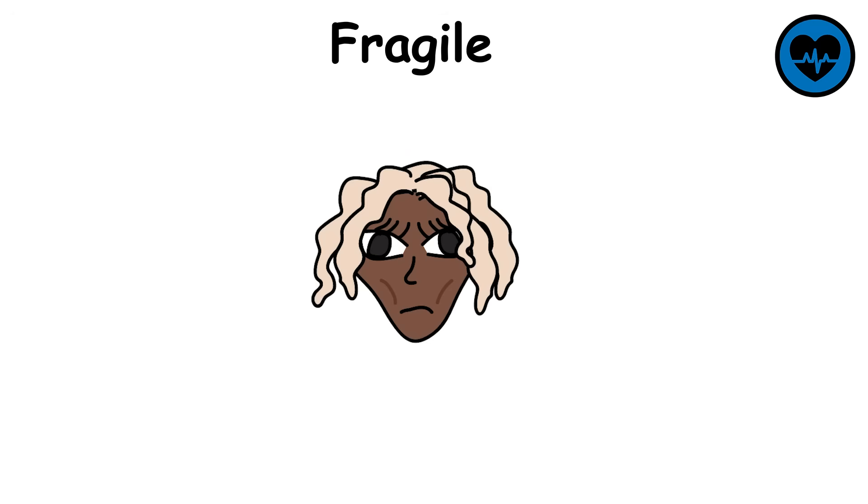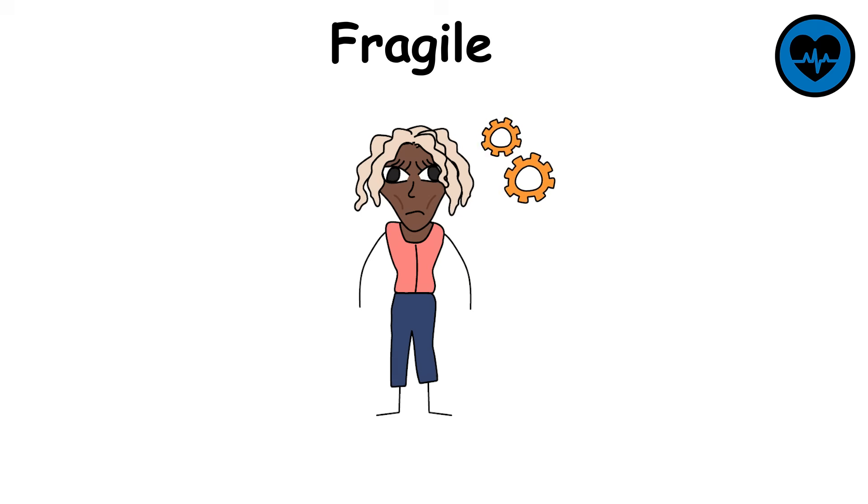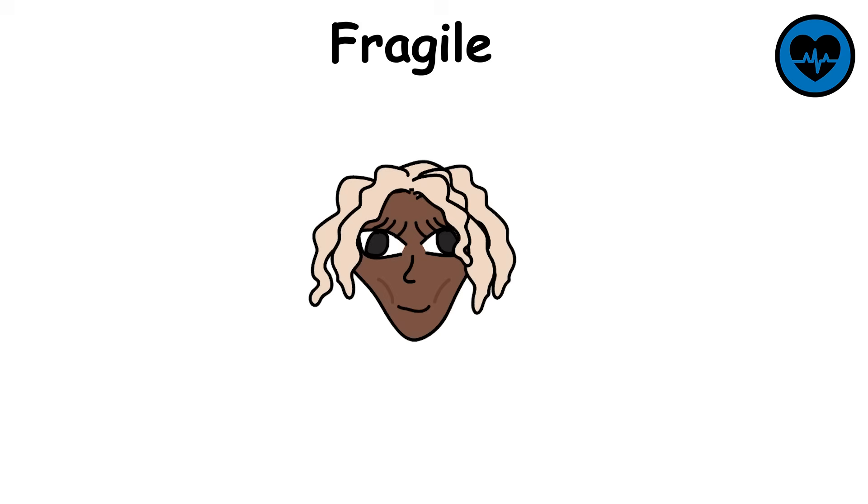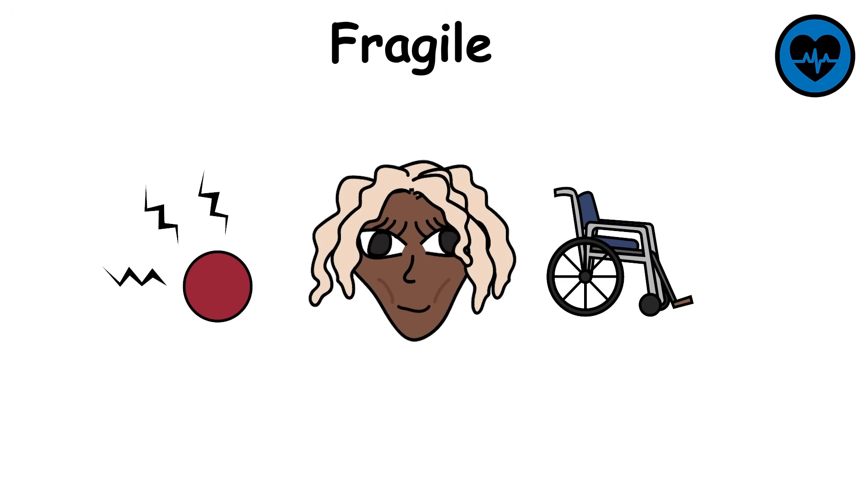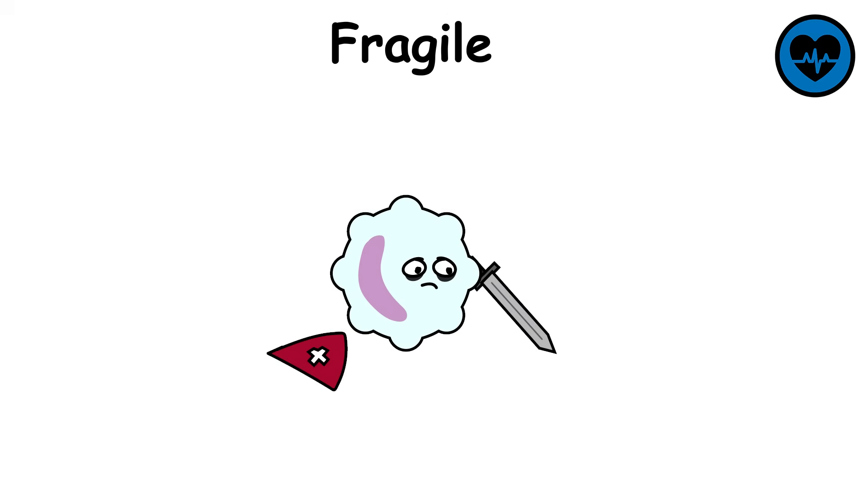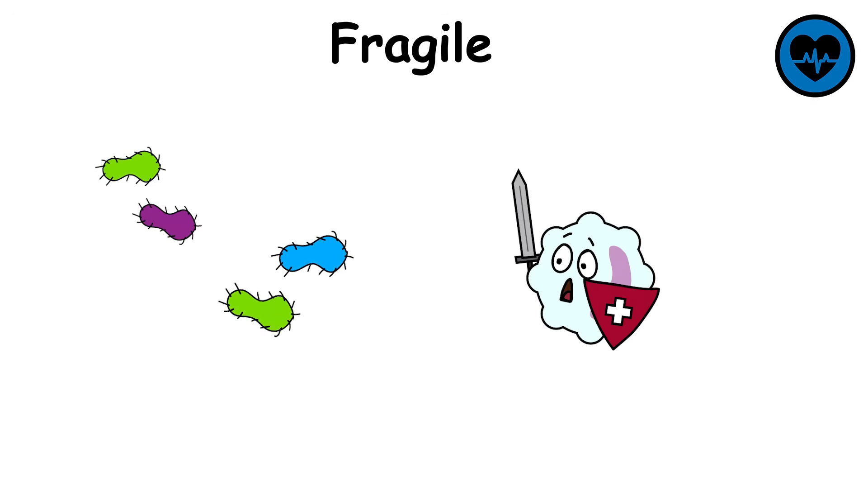Fragile health. Fragile health describes a body that works, but with little resilience. People at this level may not face constant pain or disability, yet they are vulnerable to illness and setbacks. A simple cold can turn into weeks of recovery, and minor injuries linger instead of healing quickly. The immune system often struggles, making infections more frequent.